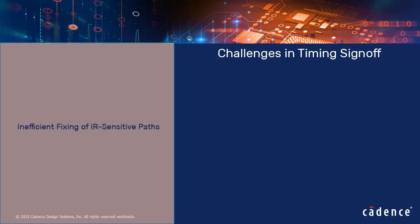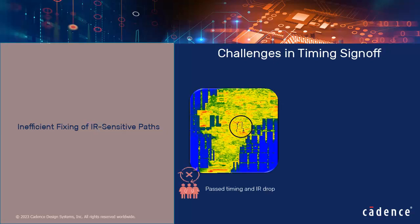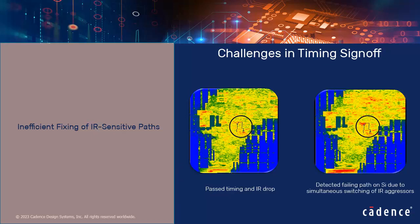The manual techniques used to fix IR drop hotspots are inefficient and time-consuming because finding the right manual ECO can be challenging when designers do not have the complete timing and physical information of the design.